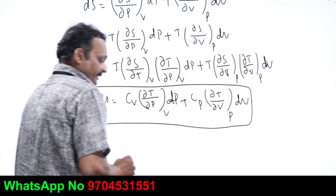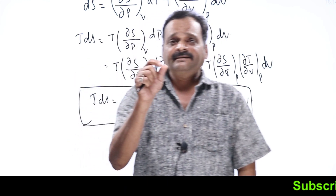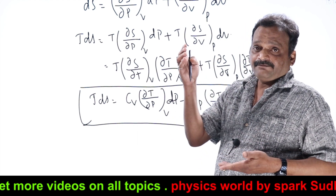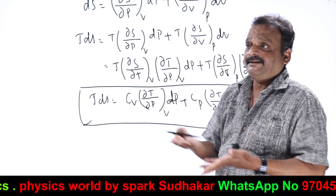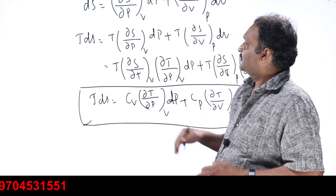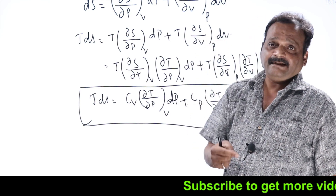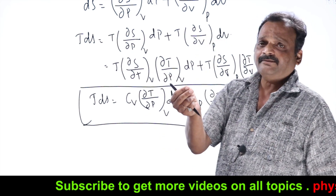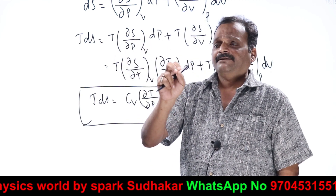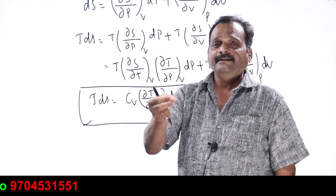In an objective exam, you may not expect lengthy problems from these equations, but they may give you four TDS equations and ask which is not a TDS equation. So instead of memorizing these equations, try to derive them on the spot — it hardly takes one minute to derive any TDS equation. Entropy as a function of temperature and volume, temperature and pressure, or pressure and volume — you get the three TDS equations.